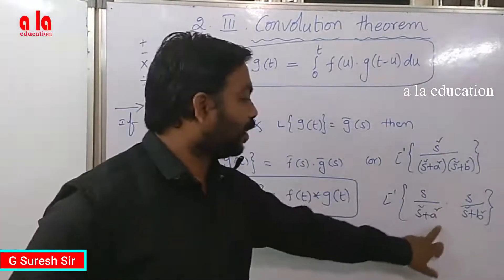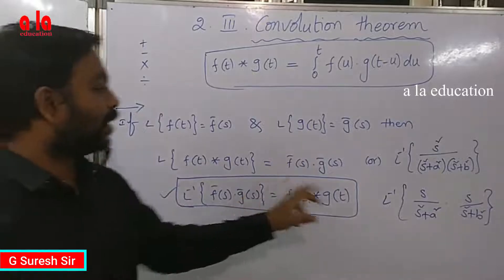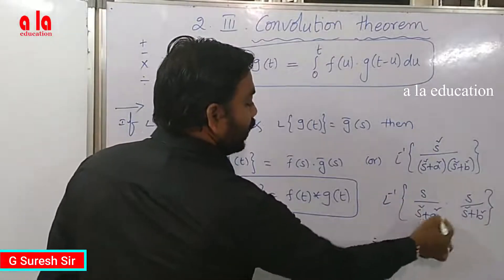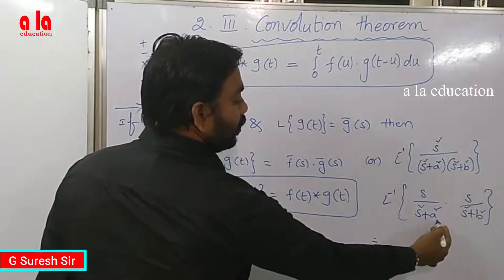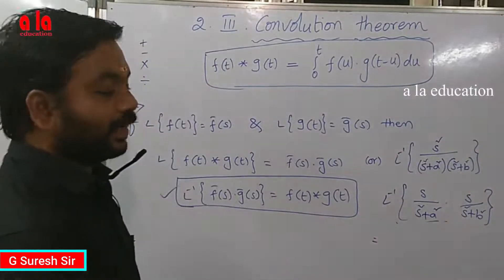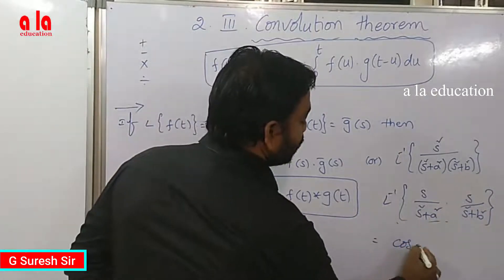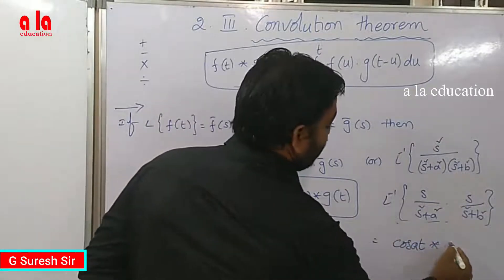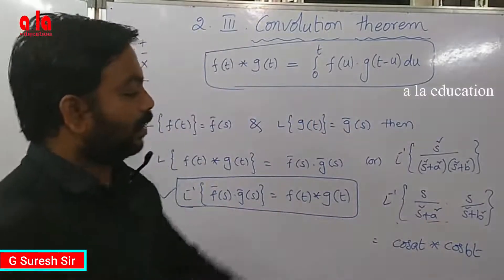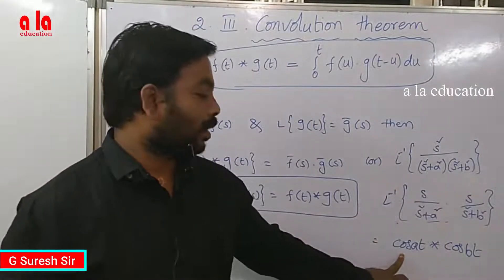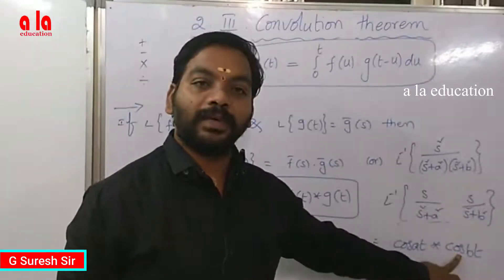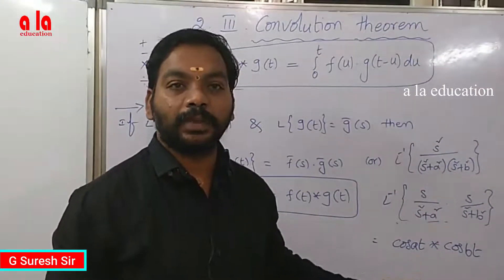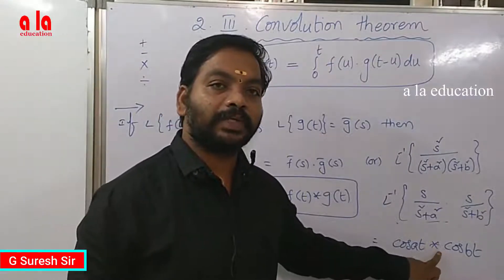So F̄(s) is the first one and Ḡ(s) is the second one: s over (s squared plus b squared). This is equal to L-inverse of the first one, f(t). The L-inverse of F̄(s), that is s over (s squared plus a squared), gives cos(at). Convolution product with s over (s squared plus b squared) gives g(t) equals cos(bt). So the total value equals the convolution product of cos(at) and cos(bt).